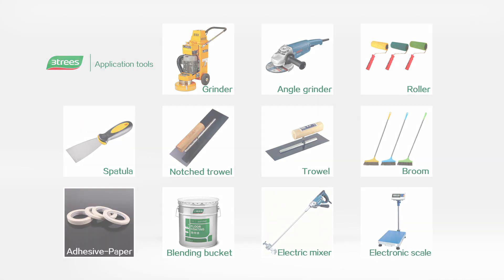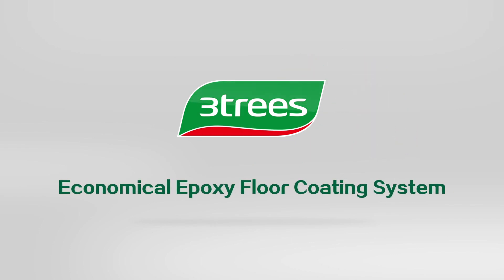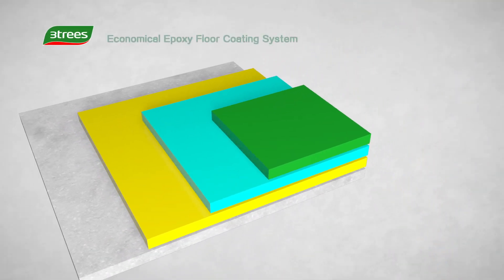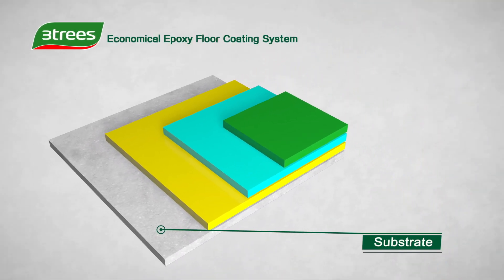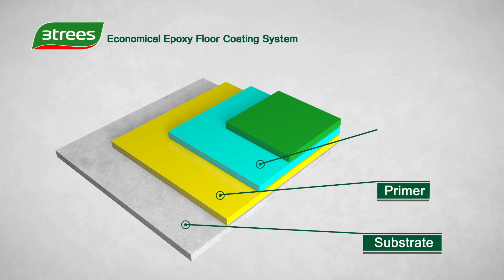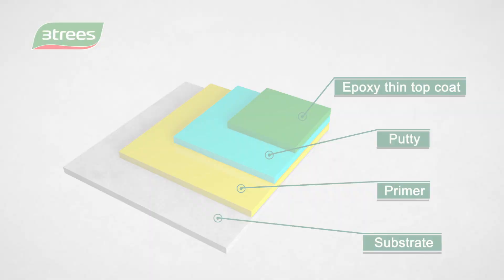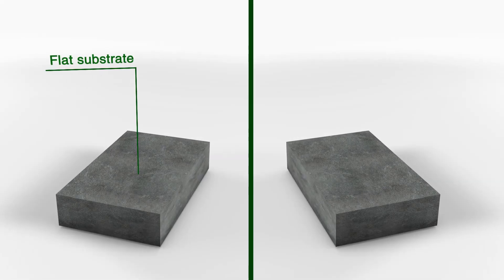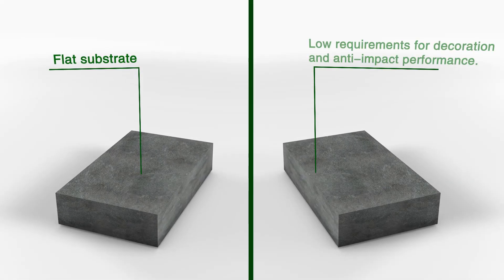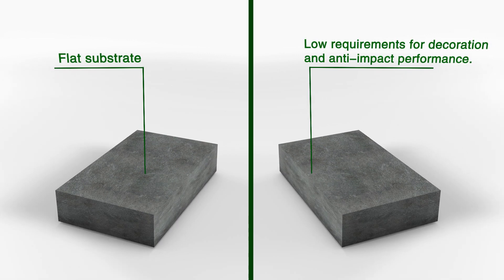Following is a detailed introduction of 3T's economical epoxy floor coating system. This system is composed of primer, putty and epoxy thin top coat. It is suitable for flat substrate or the one that has no requirements for decoration and anti-impact performance.